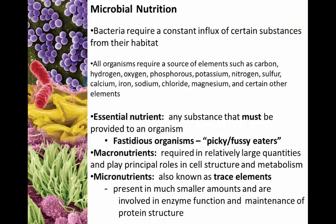Let's talk a little bit about microbial nutrition. Like all cells, bacteria require a constant influx of certain substances from their habitat. All organisms require things like carbon, hydrogen, oxygen, phosphorus, nitrogen, chloride, magnesium, and other elements. Anything that an organism must have is what we term an essential nutrient — the absence of that particular nutrient will cause the organism to die.